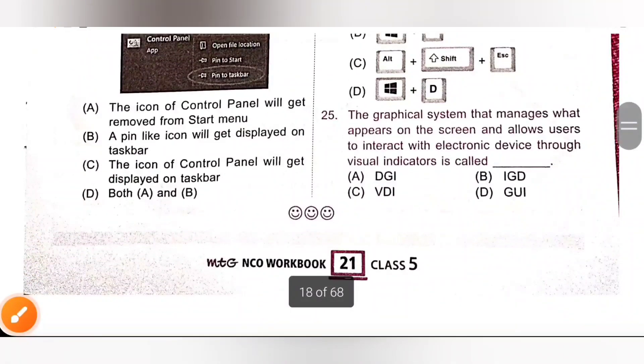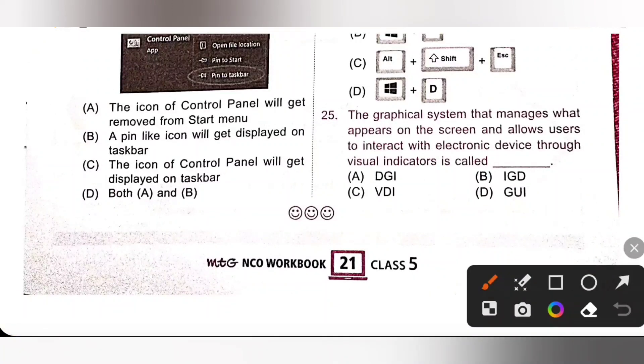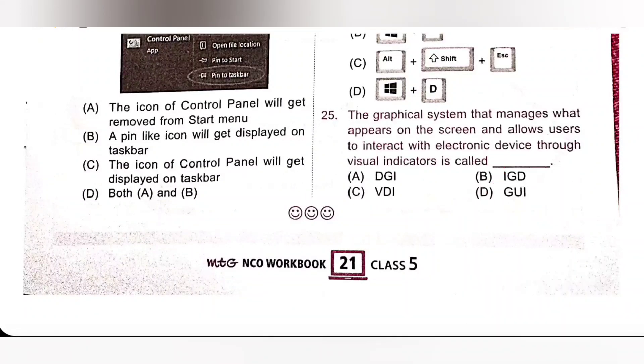Next, last one. The graphical system that manages what appears on the screen and allows user to interact with the electronic device through visual indicators is called dash. Option A, DGI; B, IGD; C, VDI; D, GUI. So, it is called GUI, graphical user interface. Option D is the correct answer.